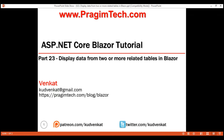This is part 23 of the Blazor tutorial. In this video, we'll discuss how to retrieve data from two or more related database tables and display them in a Blazor web application. There are several ways to do this and there is no right or wrong way. Which way you choose really depends on the architecture, complexity, and the requirements of your application.